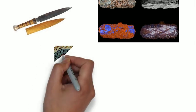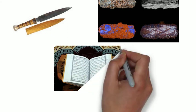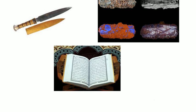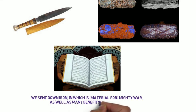More than 1,400 years ago, the Holy Quran mentioned that iron was sent down and had great strength. Chapter 57, Verse 25: We sent down iron, in which is material for mighty war, as well as many benefits for mankind.